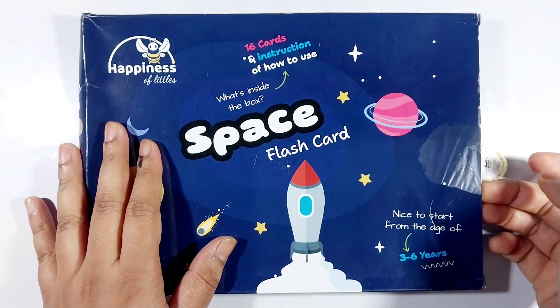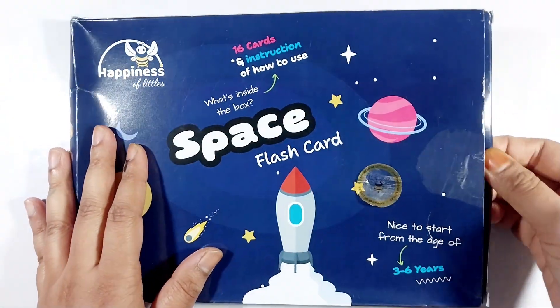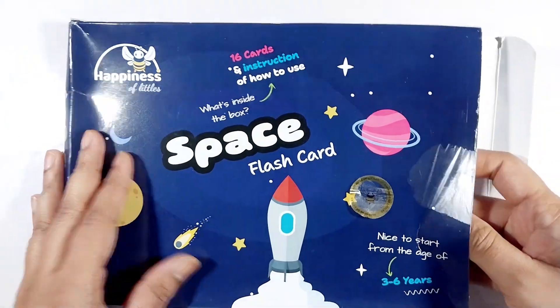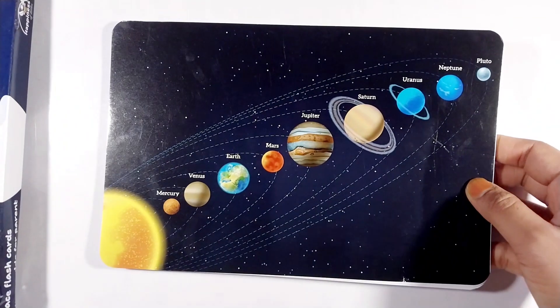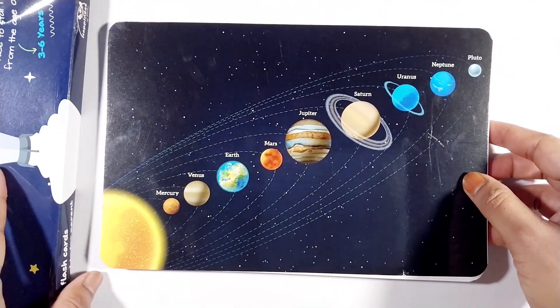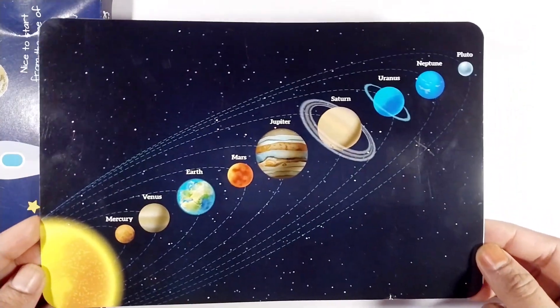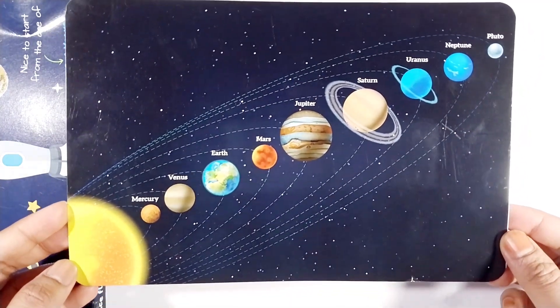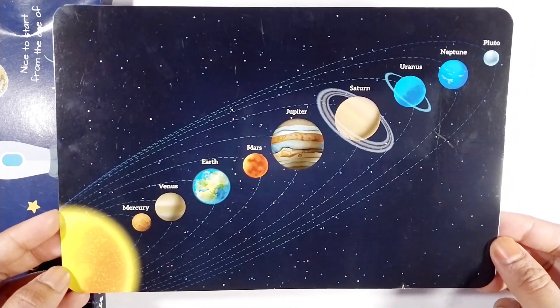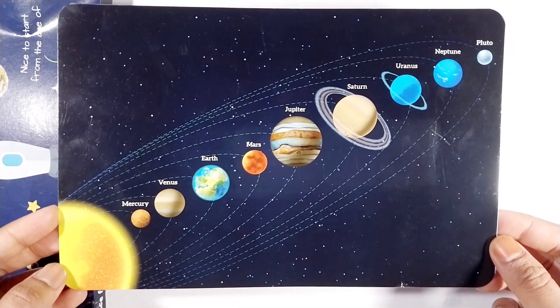Space Flash Cut from Happiness. The product link is in the description box. This is our solar system. The sun is our star.